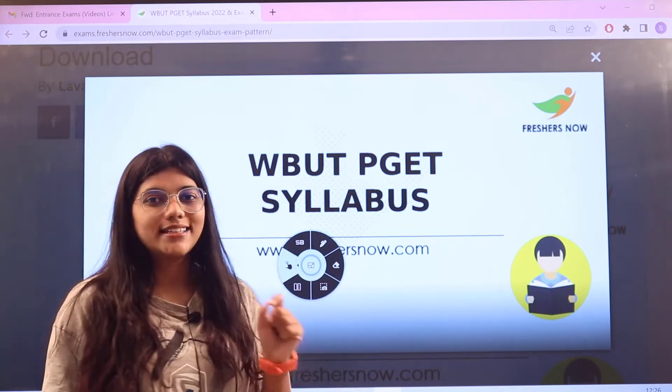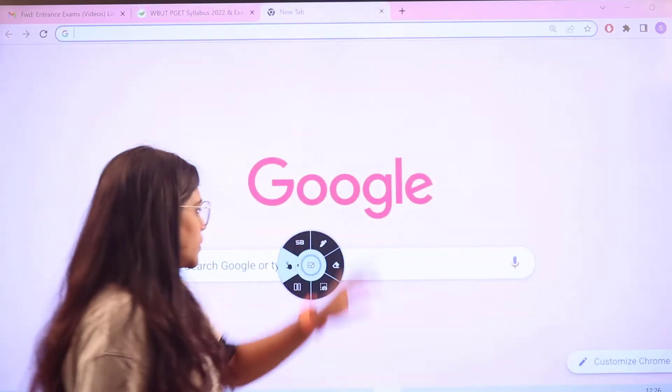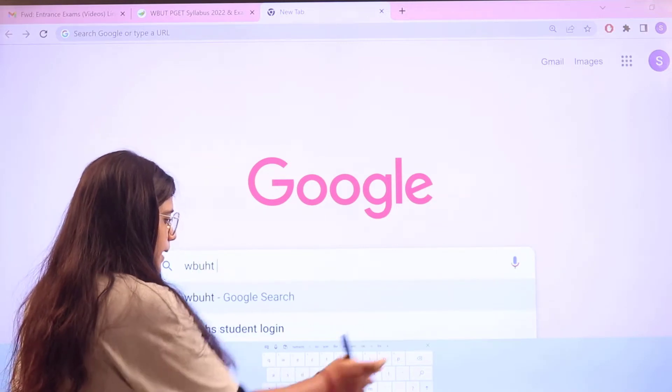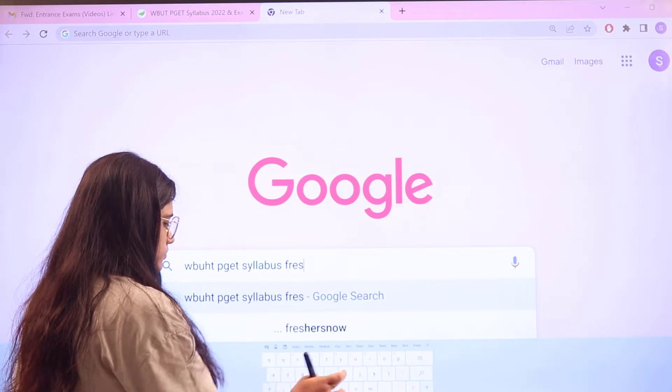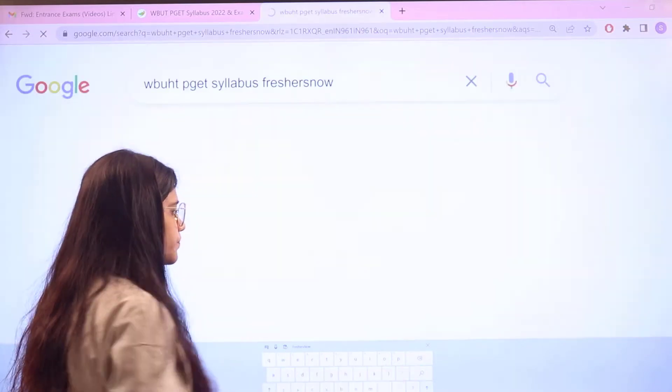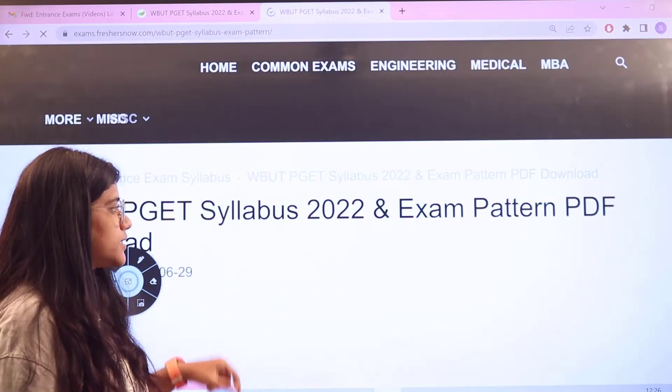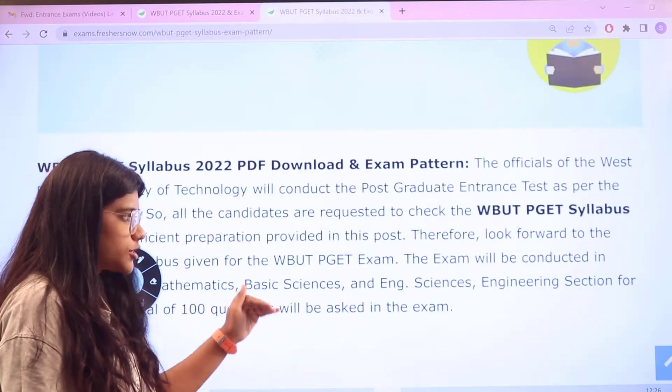So now let us first head over to Google and search for WBUT PGET syllabus freshersnow. As you search like this, you can see the first link itself is from exams.freshersnow. Give a click on this and this particular page will be opening up for you.